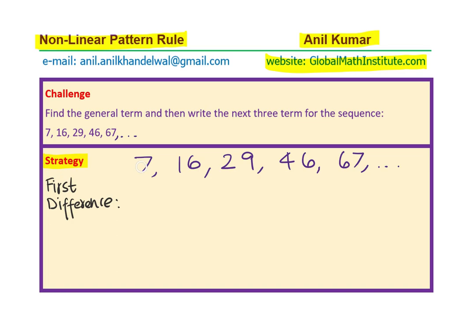Consecutive terms are 7 and 16. So 16 minus 7 gives us 9 as the first difference between terms 7 and 16. The difference between 16 and 29: 29 minus 16 is 13. The difference between 46 and 29 is 17. And the difference between 67 and 46 is 21. So we notice that the first difference is not constant.